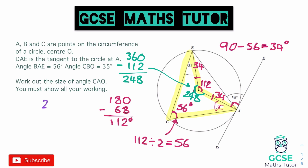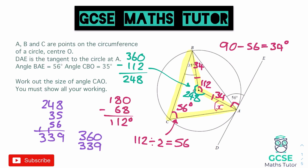We've got 248, plus 35, plus 56 — adding those together gives 339. So 360 minus 339 leaves us with 21 degrees. That's our final answer: angle CAO equals 21 degrees. All the working is shown around the diagram. There are loads of different ways to get this answer — that's just one method I've chosen for this question.